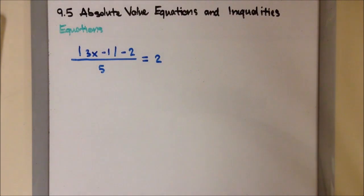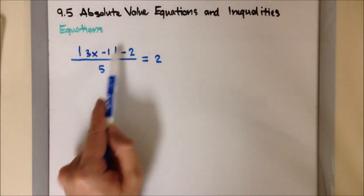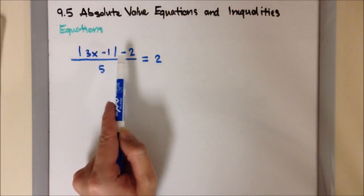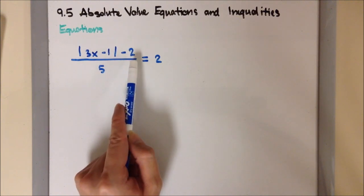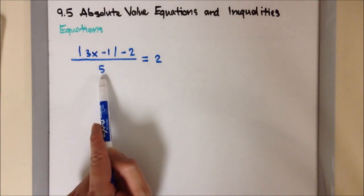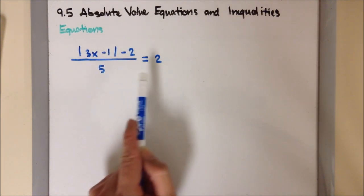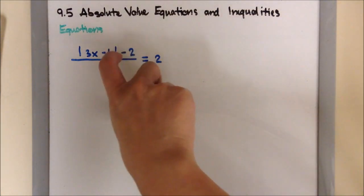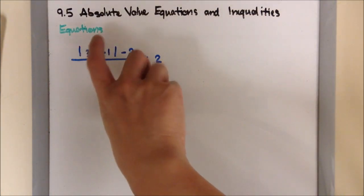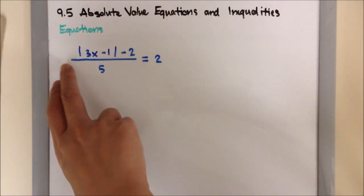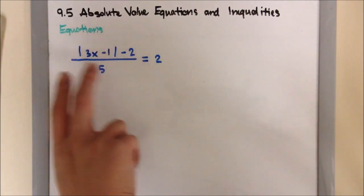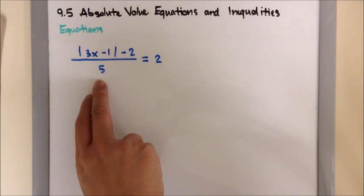In this next example, I have the absolute value of 3x minus 1, and then minus 2, with the whole thing divided by 5, equal to 2. This one actually has a number behind the absolute value while the whole expression is being divided by 5.